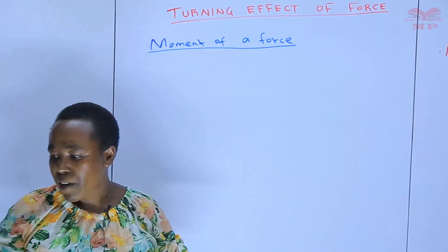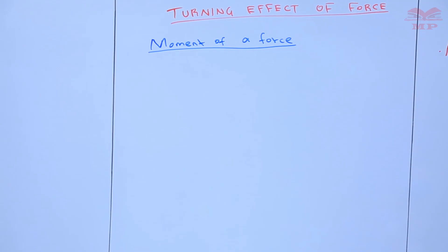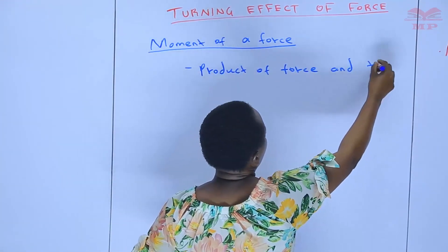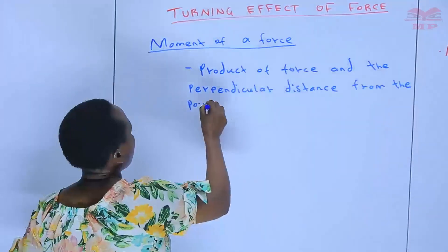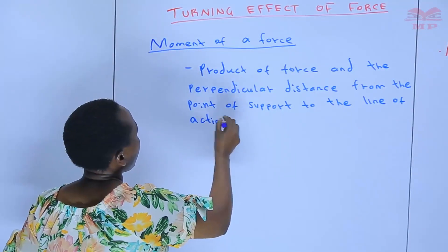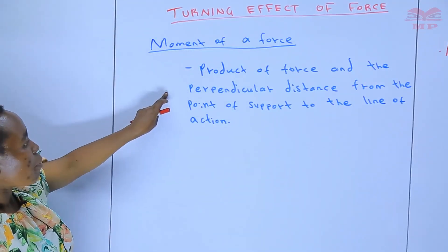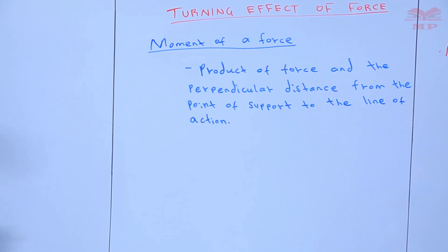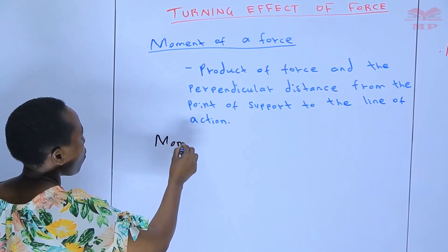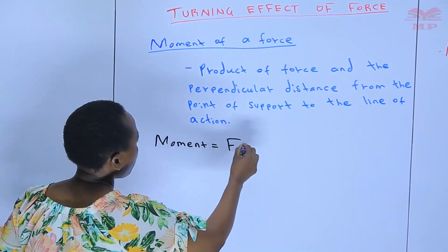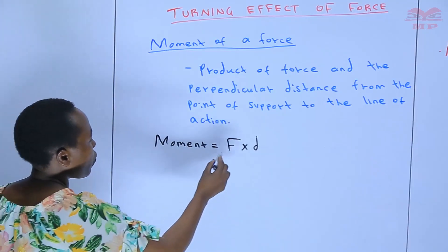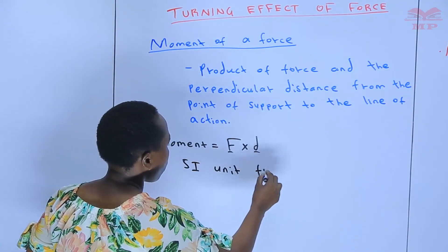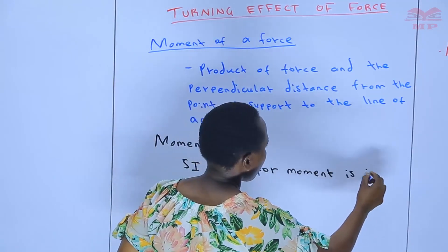We defined moment of a force as the product of force and the perpendicular distance from the point of support to the line of action. The formula for moment is force multiplied by distance, where force is in Newtons and distance is in meters. Therefore, the SI unit for moment is Newton meters.